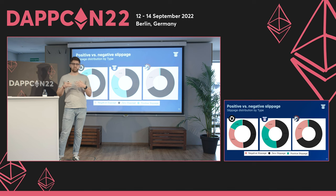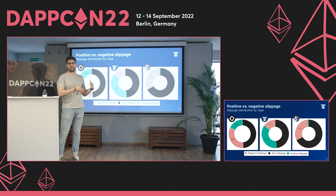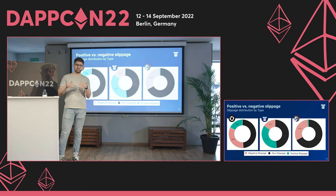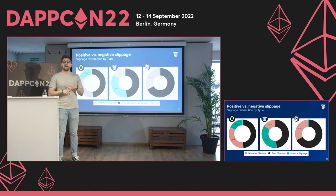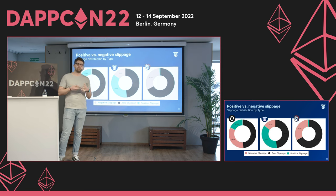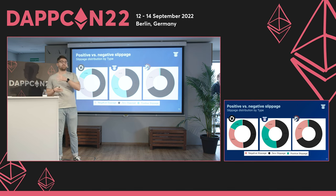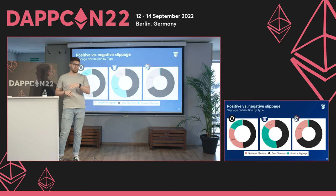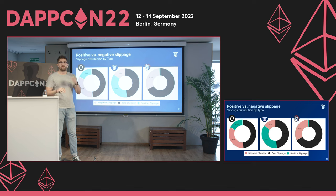For 1inch, the results differ most from the other two aggregators. They have a zero slippage rate of almost 68% and 31% negative slippage, but only 1% positive slippage. This is because of 1inch's business model: by direct vote of their governance system, 1inch takes positive slippage and forwards it to user referrals and their treasury. So from a user's perspective, they only see 1% positive slippage — without this model, it would probably look very similar to 0x.